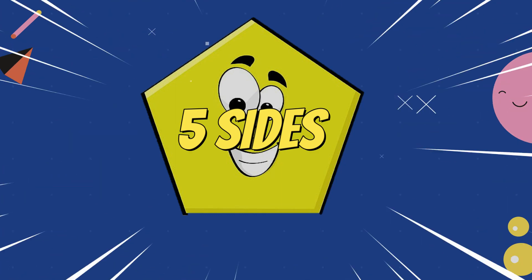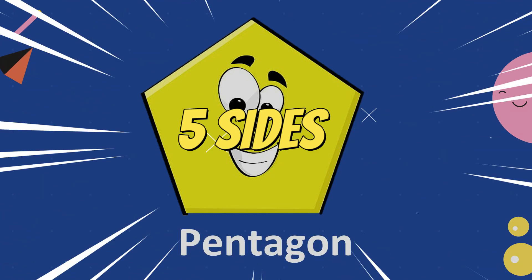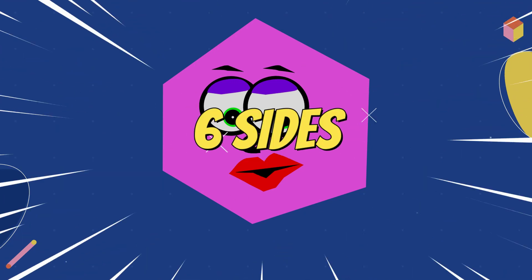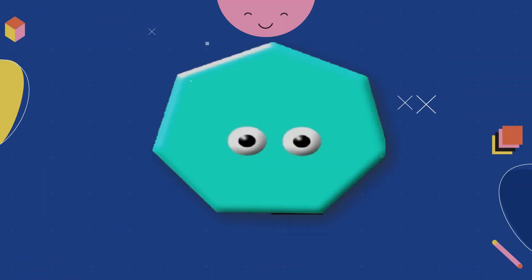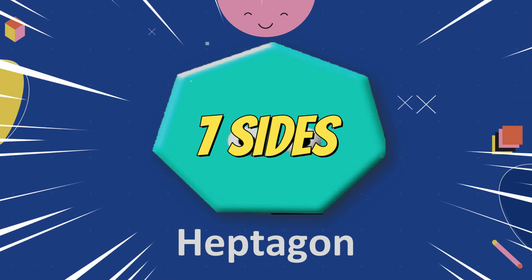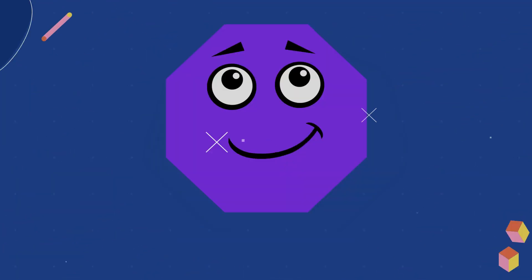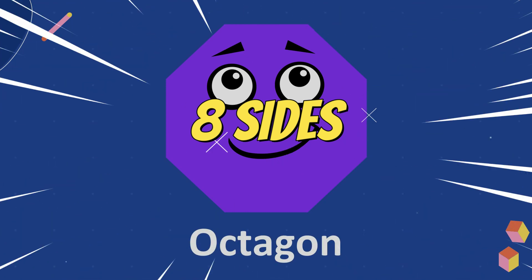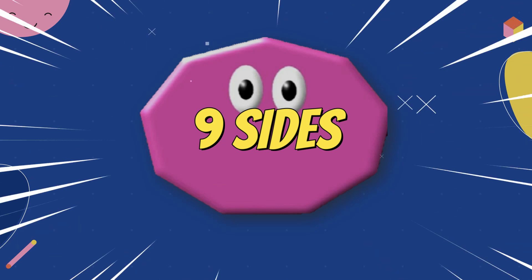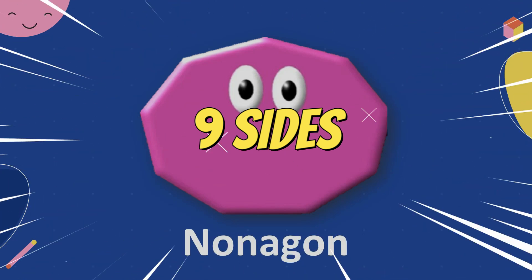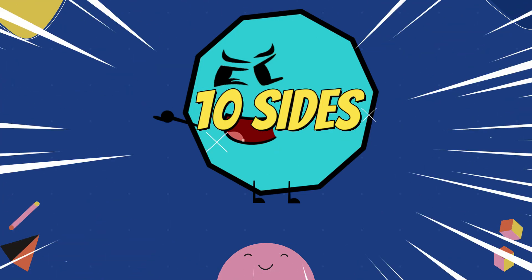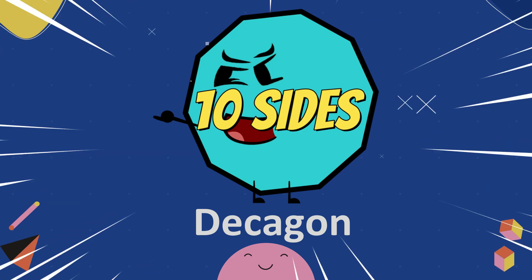Five sides, pentagon. Six sides, hexagon. Seven sides, heptagon. Eight sides, octagon. Nine sides, nonagon. Ten sides, decagon. Congratulations!